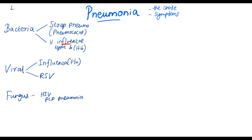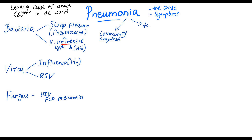Pneumonia is the leading cause of death in children less than five years of age in the world. Mainly there are two types of pneumonia: community acquired and hospital acquired. We divide pneumonia into these two categories because of the treatment options. Hospital acquired pneumonia needs more attention and more aggressive treatment.